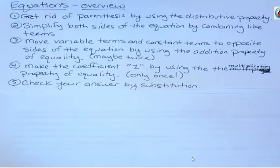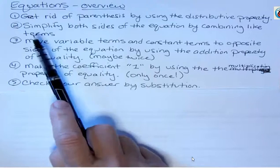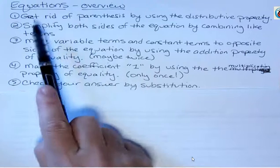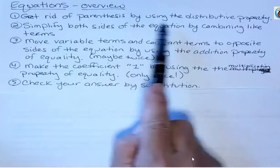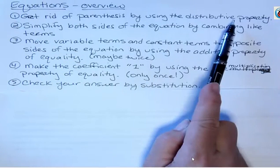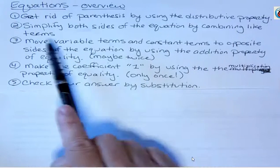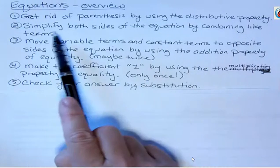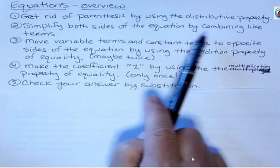When you're faced with solving an equation, there's a certain process. First, get rid of parentheses by using the distributive property. Secondly, simplify both sides of the equation by combining like terms.